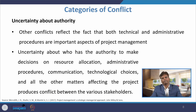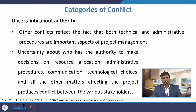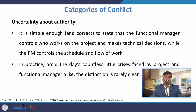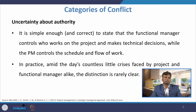Whenever there is uncertainty about authority, that leads to project conflict — due to resource allocation questions, administrative procedures, and communications. It is simple enough to state that the functional manager controls who works on the project and makes technical decisions while the project manager controls the schedule and flow of work. However, in practice, amid the day's countless little crises faced by both project and functional managers, the distinction is rarely clear, because so many activities are taking place and the roles, responsibilities, and authorities are not well separated.